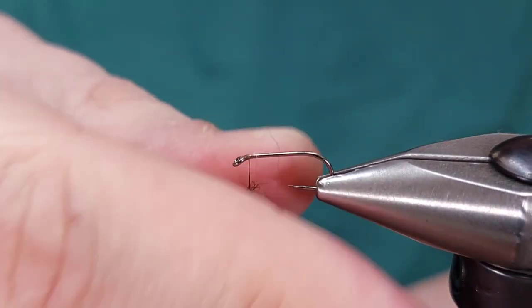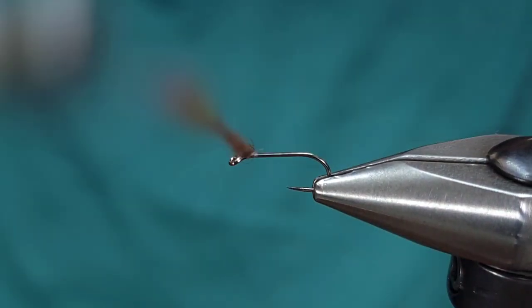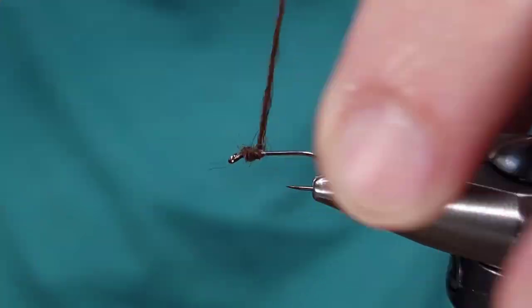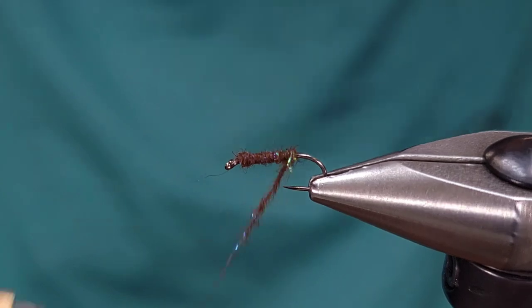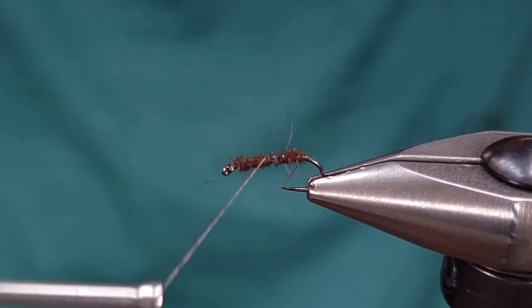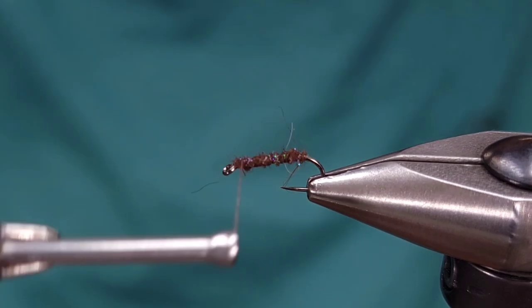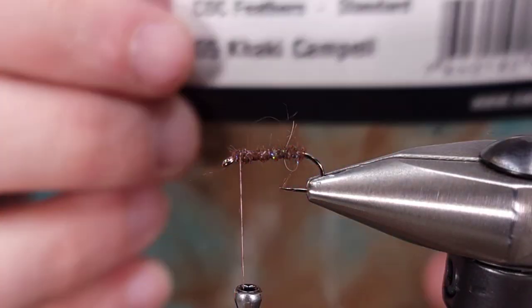On this fly I actually don't like using wire. I just use thread to rib this body, which is why I'm using Semperfli Nano Silk because it's super strong. You can see here I got a better taper. I'm just going to wrap that all the way back to the end and then rib my body all the way back to the head using the thread.